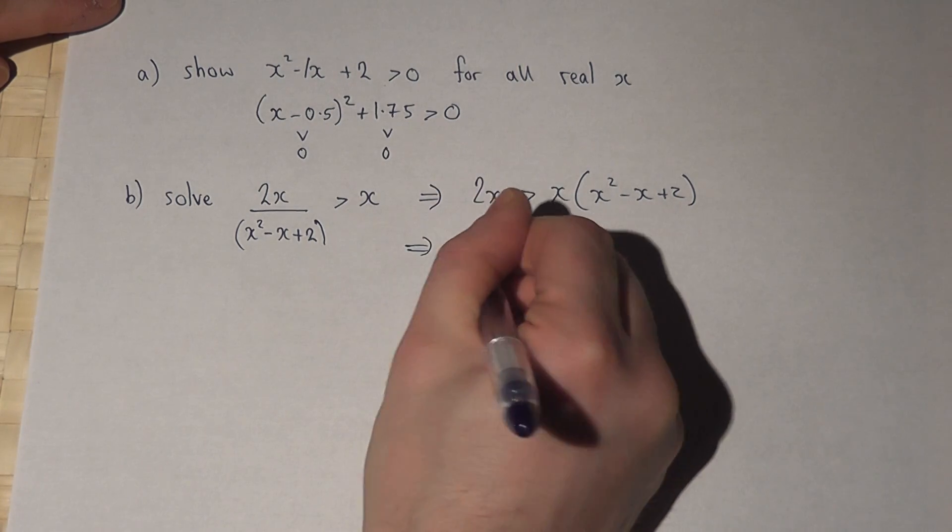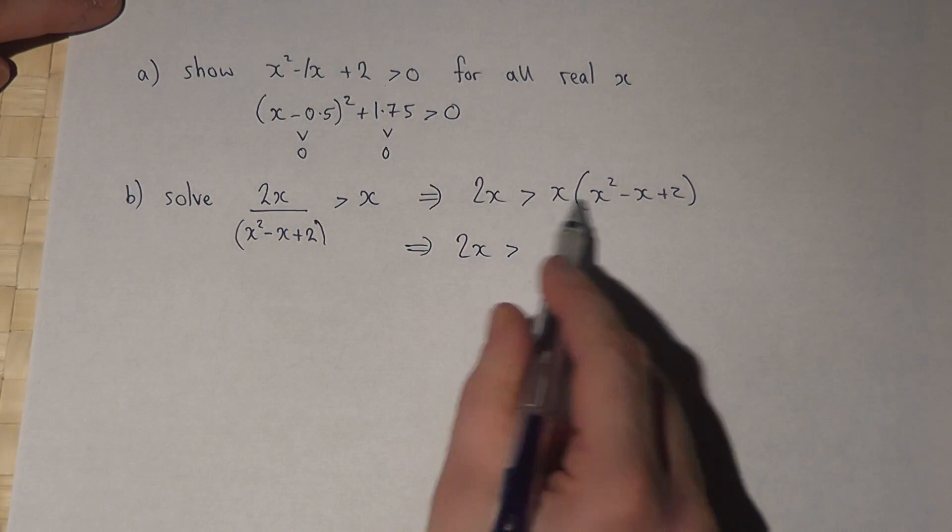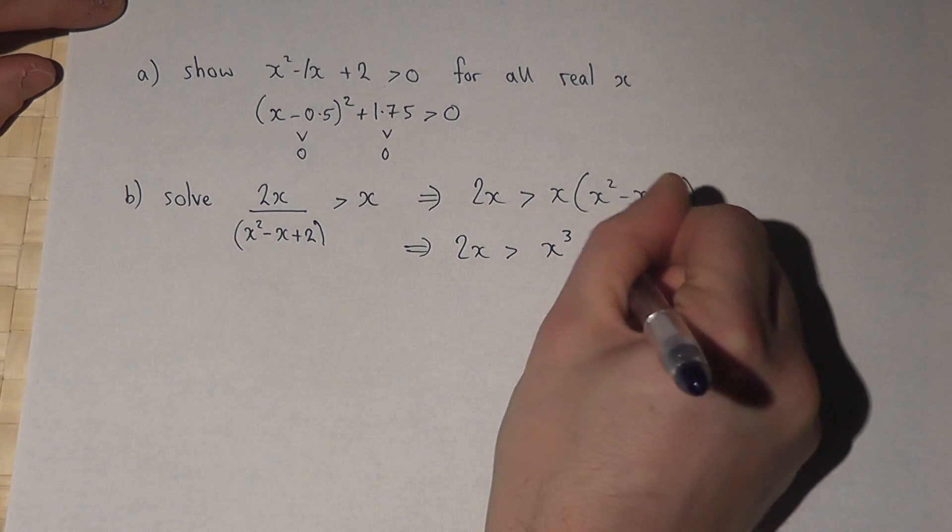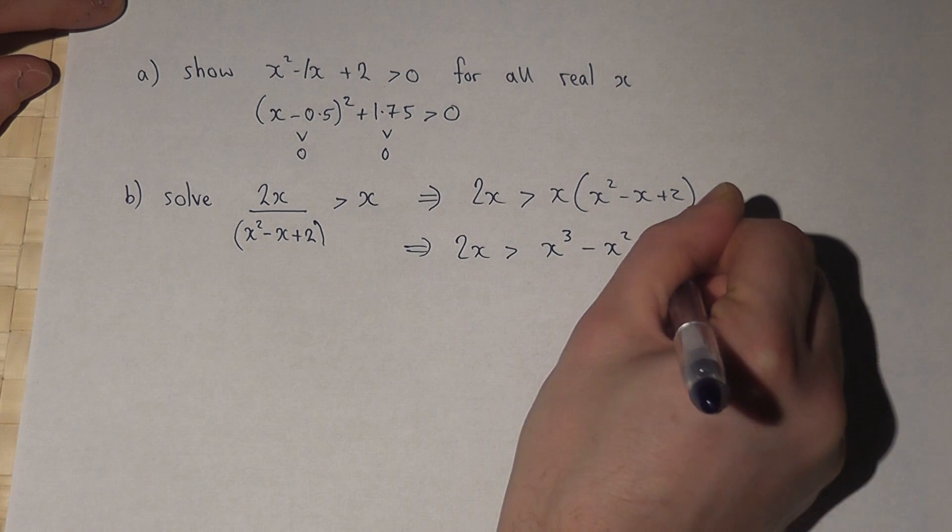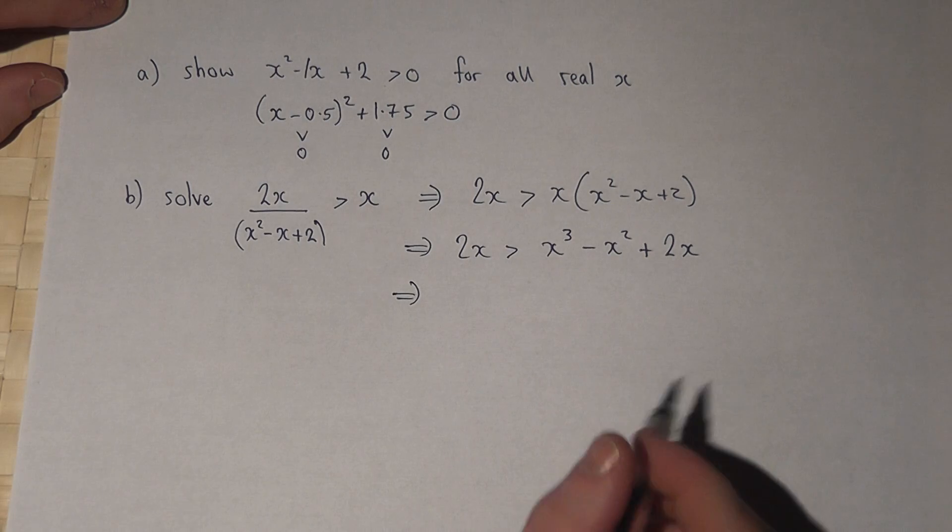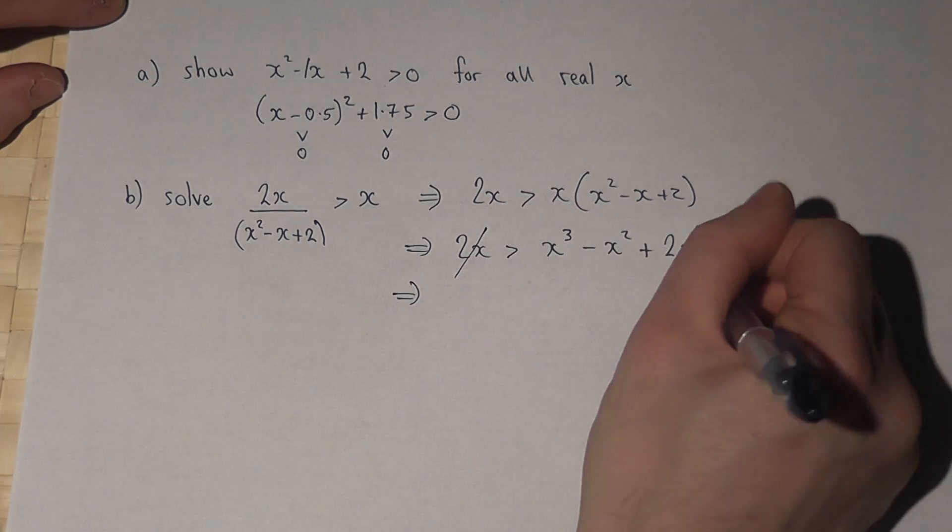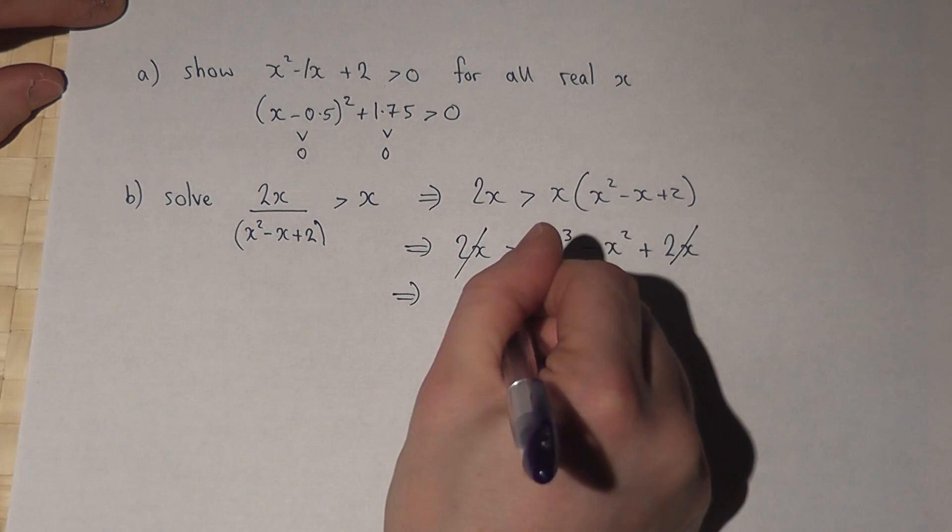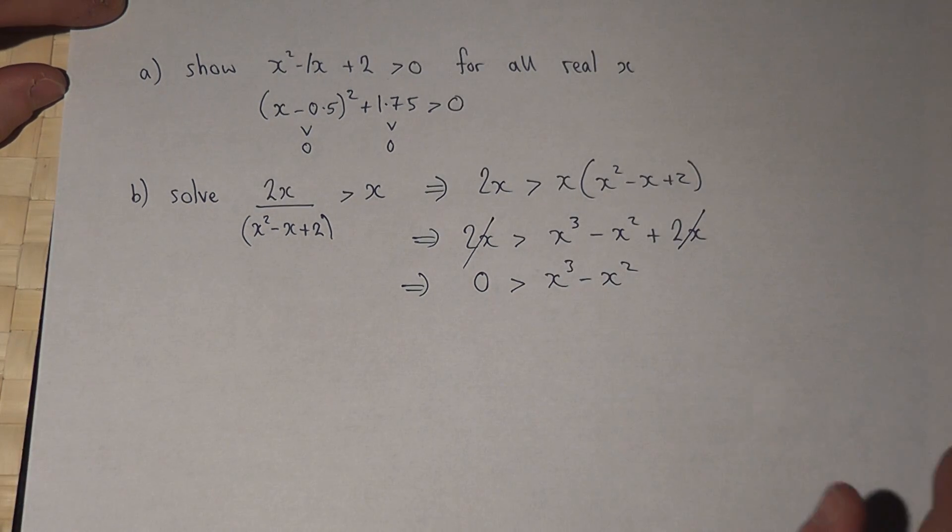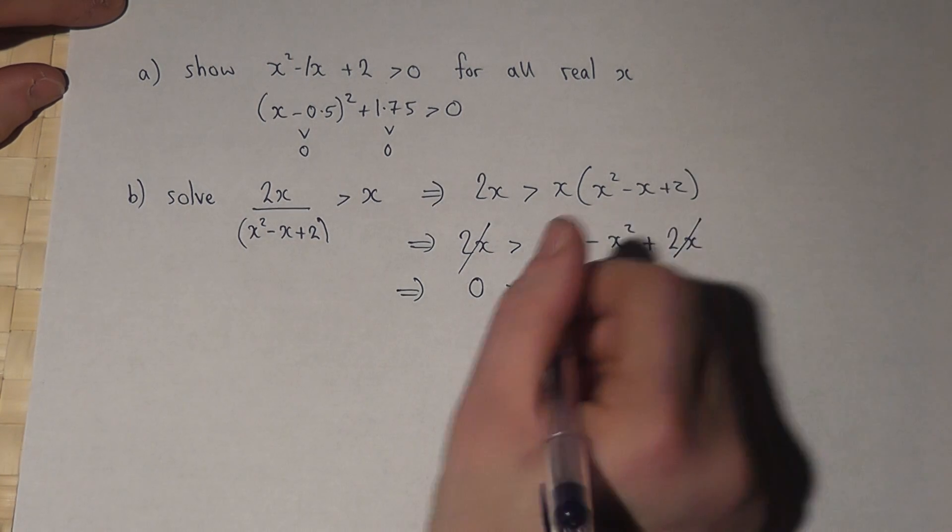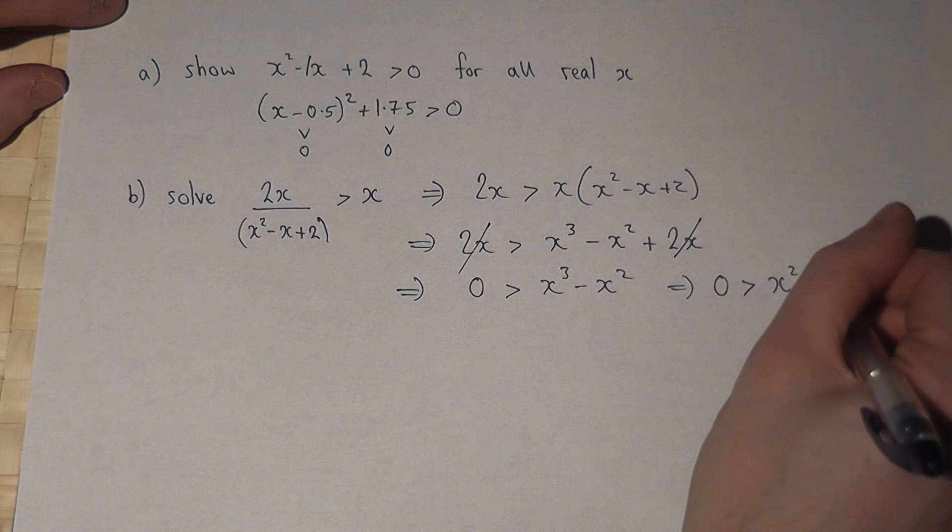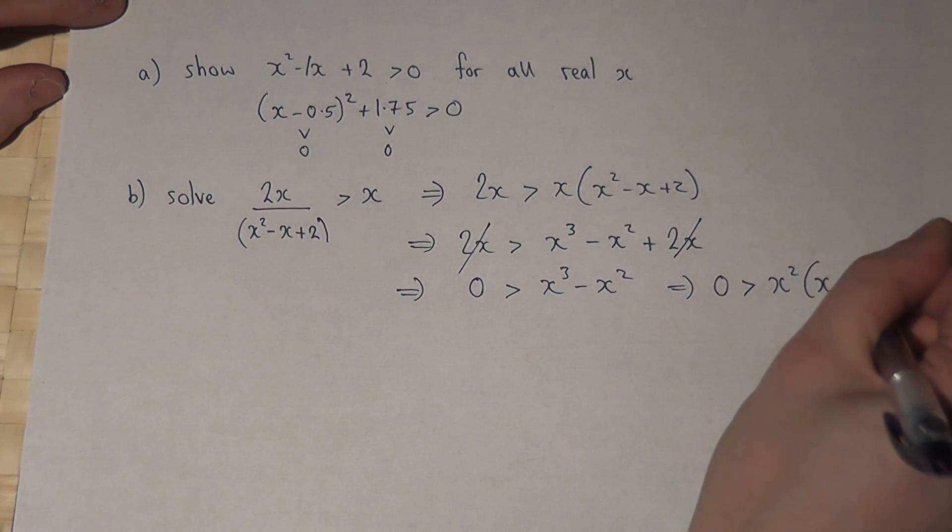If I now expand this, I get x cubed minus x squared plus 2x. If I then rearrange it by taking 2x from both sides, the 2x's cancel off, and I get 0 is greater than x cubed minus x squared. Now this can then be factorized to give me 0 is greater than x squared times x minus 1.